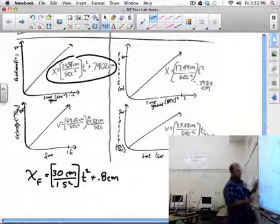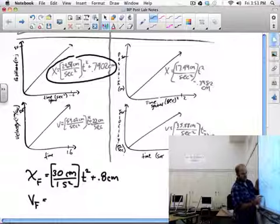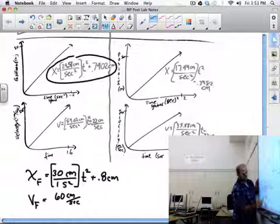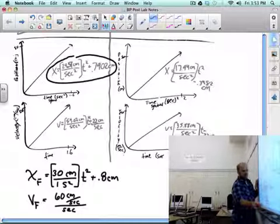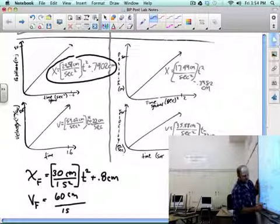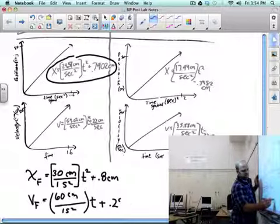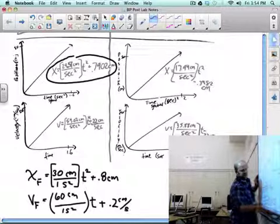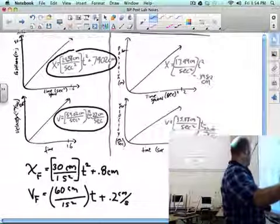And then its companion equation is v final equals 60, I'm just rounding, centimeters per second per second. Notice the same exact units. I could rewrite this the same way. 60 centimeters over one second squared times t plus we've got 0.2 centimeters per second. So I'll use these two as my example, and the others you can figure out for yourself.